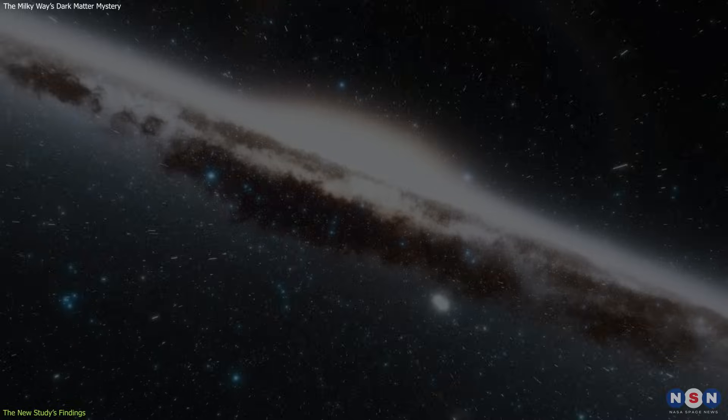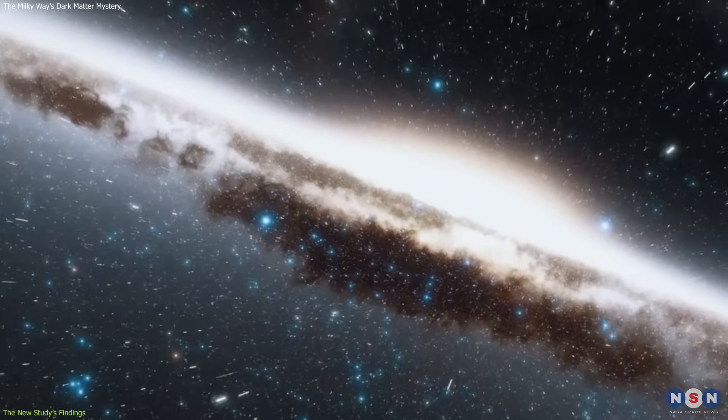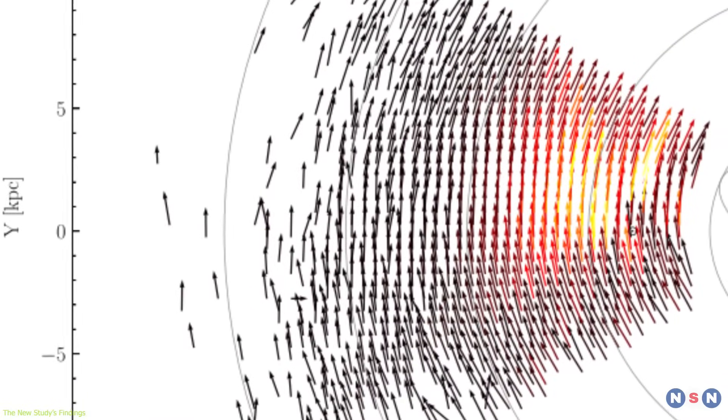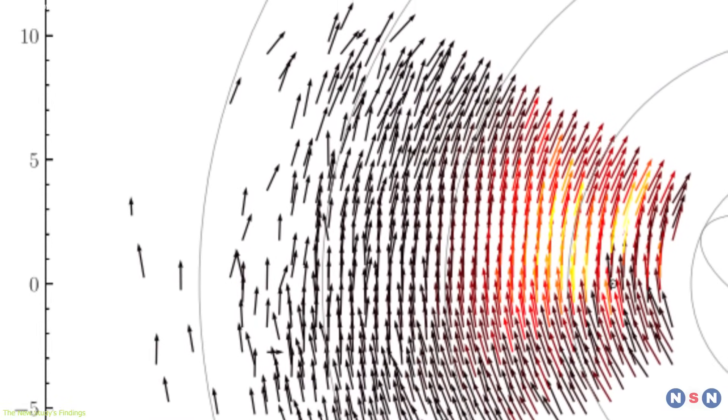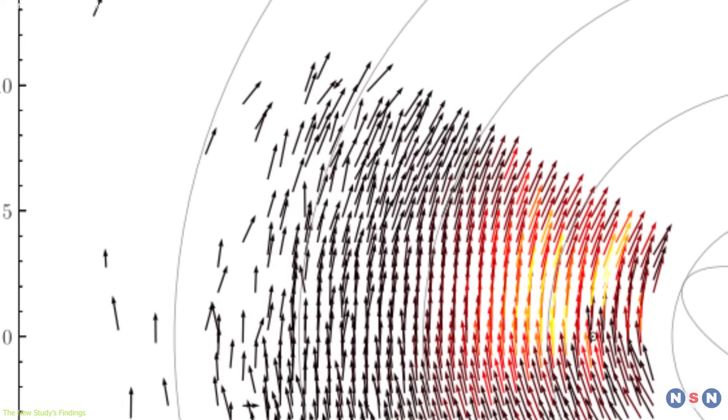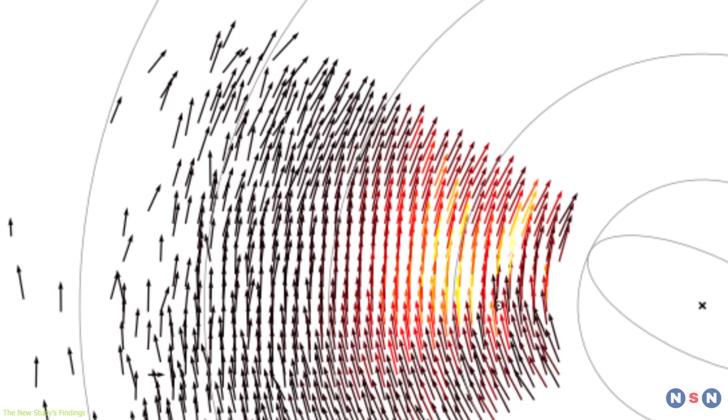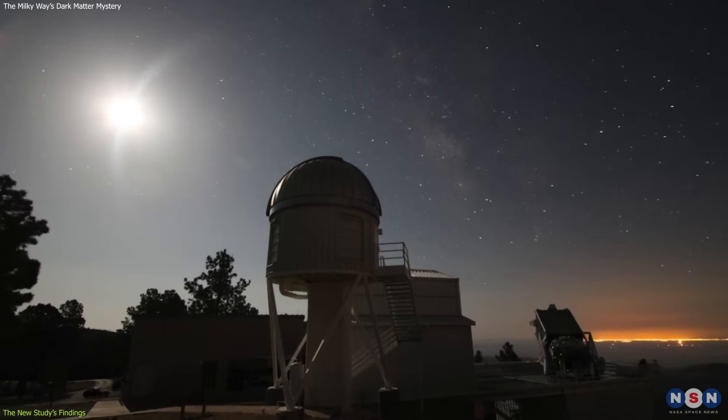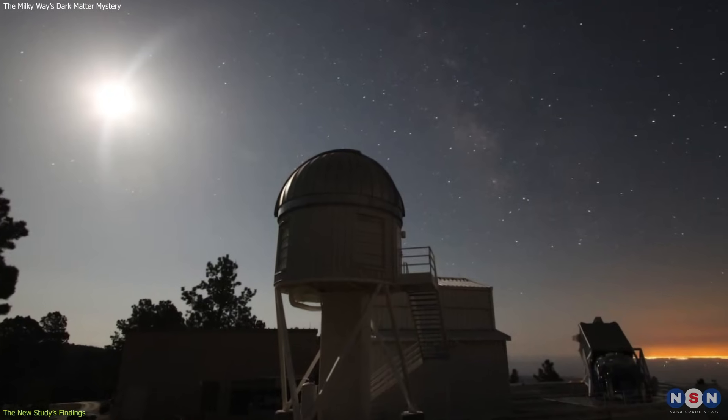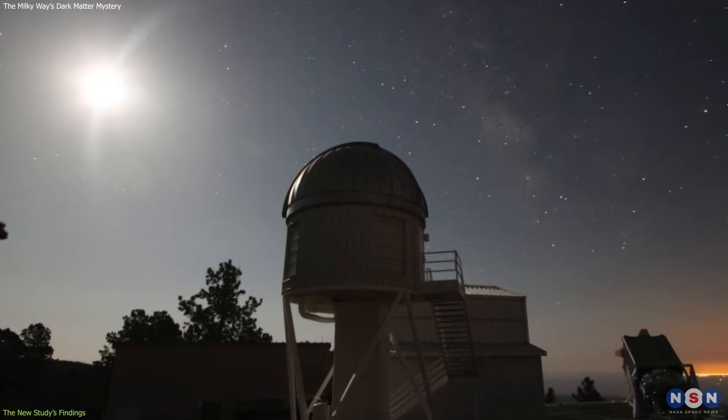By combining the data from these two instruments, researchers were able to map the velocities of stars in different regions of the galaxy, from the center to the edge. What they discovered was that stars at the edge of the galaxy travel more slowly than expected, compared to stars closer to the galaxy's center.